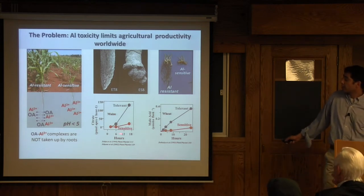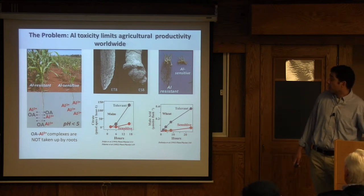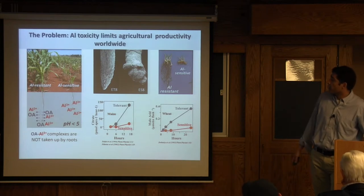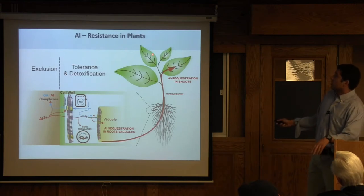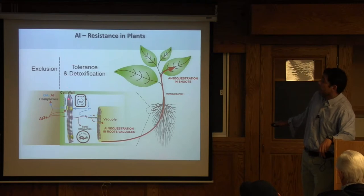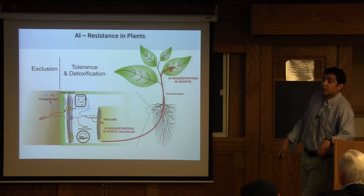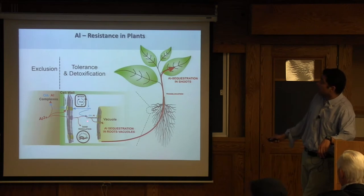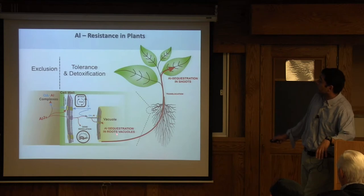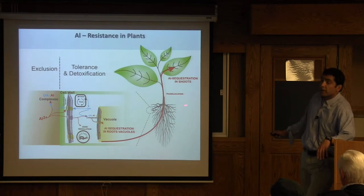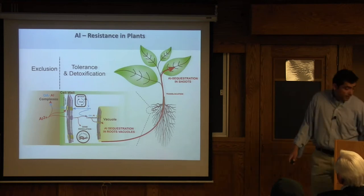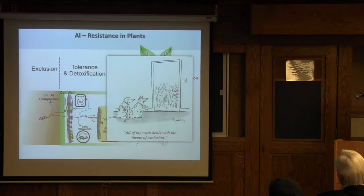This was originally described in wheat, subsequently in maize, and has now been reported as a highly conserved mechanism throughout a whole variety of crop species. Overall, aluminum resistance in plants can be achieved by an exclusion mechanism — the release of organic acids into the rhizosphere forming non-toxic complexes — or by true tolerance or detoxification mechanisms. If aluminum gets across the plasma membrane, it can form complexes with organic acids sequestered into the vacuole in a non-toxic form, or in some cases loaded into the xylem and translocated to the shoots, as in aluminum hyperaccumulators such as tea crops.